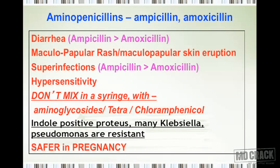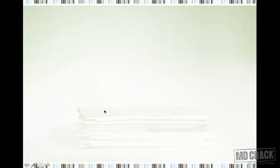An important last point: aminopenicillins are safe in pregnancy. They are in pregnancy risk category B, making them a suitable choice when antibiotic therapy is needed during pregnancy.